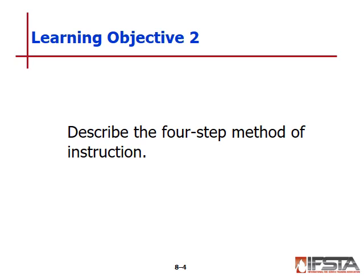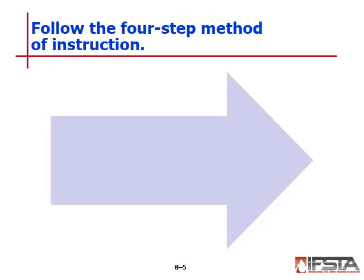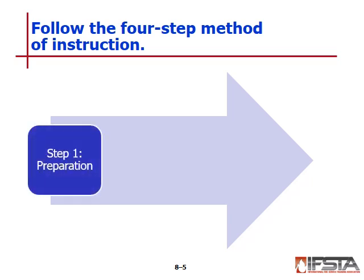Next, let's look at the four-step method of instruction. Step one is preparation. This includes introducing topics, gaining students' attention, clearly stating learning objectives, and identifying how students will be evaluated. It also includes instructor self-preparation such as reviewing lesson plans, reading appropriate material, and gathering equipment like AV aids, training props, and practicing the skill to be taught.